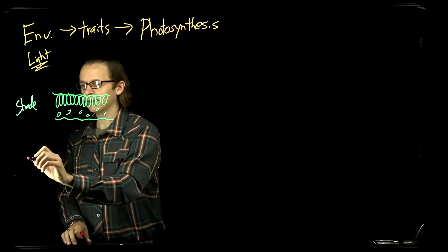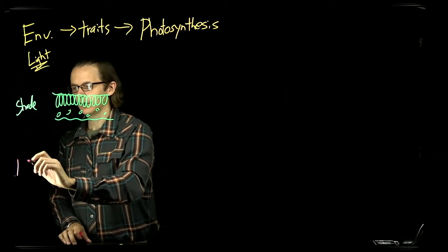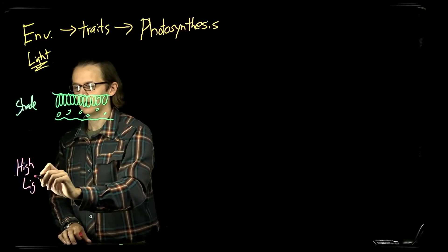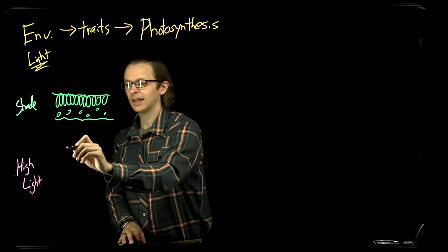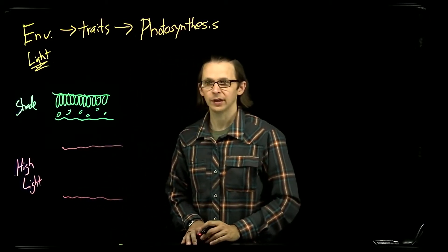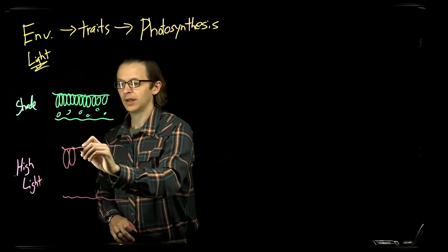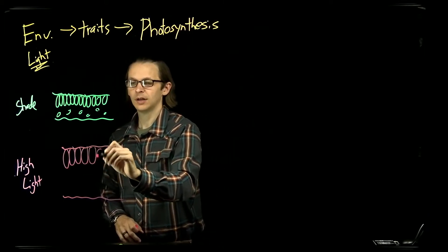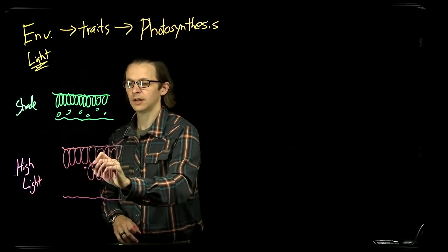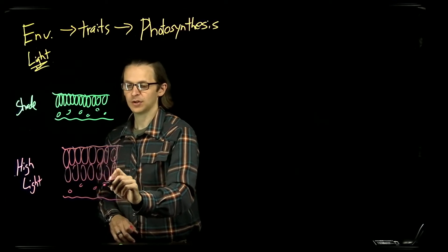If we compare that to a similar leaf but developed under conditions of high light, that leaf would very often be thicker. It still has two layers of waxy cuticle preventing water loss, but its palisade parenchyma will be more developed in the sense that it often has multiple layers, it is thicker, and it also has spongy mesophyll.